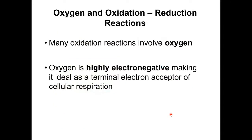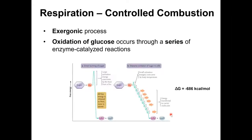Not surprisingly, electrons often end up in oxygen, as in cellular respiration. The reason is that oxygen is highly electronegative. Once it captures these electrons, it holds them so tightly they are very hard to retrieve any further energy from — making oxygen the final electron acceptor.